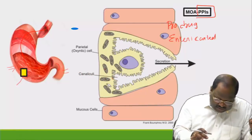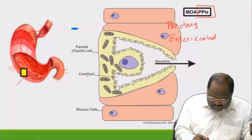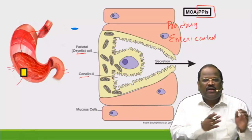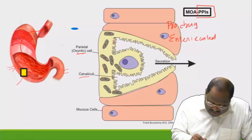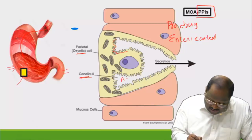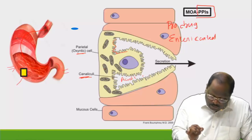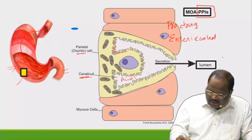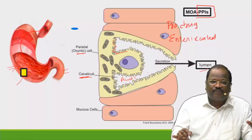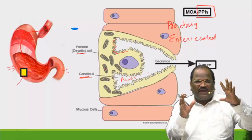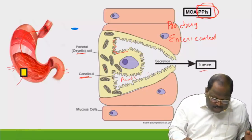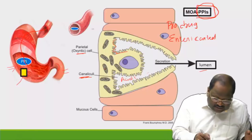In the parietal cell we have acid canaliculi. Through the acid canaliculi, acid gets secreted into the stomach lumen. Now, what is the mechanism of the proton pump blocker? Once the drug enters the circulation, it enters the parietal cell.